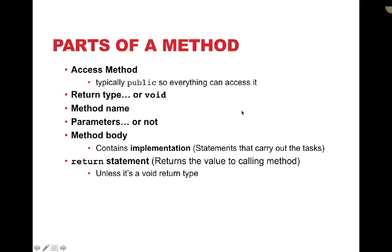There are several different parts of a method you need to become familiar with. The first line is our access modifier — typically it's public, so that means anything can access and call it. Next we have a return type or void, which is the type of thing you're getting back from the method. Each method can only return one thing — it might be a string, int, double, boolean, or an object type. Sometimes we don't need a return type and that is called a void method — it doesn't return anything, it just does something.